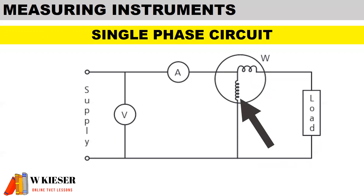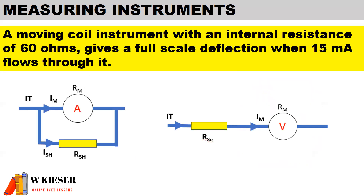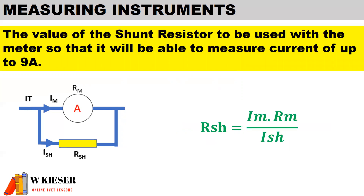For our moving coil instrument calculation — also known as a galvanometer — a moving coil instrument with an internal resistance of 60 ohms gives a full-scale deflection when 15 milliamps flows through it. This instrument can be used to either measure current (represented as an ammeter) or measure voltage (represented as a voltmeter). The objective is to determine the value of the shunt resistor so that the meter can measure current of up to 9 amps.